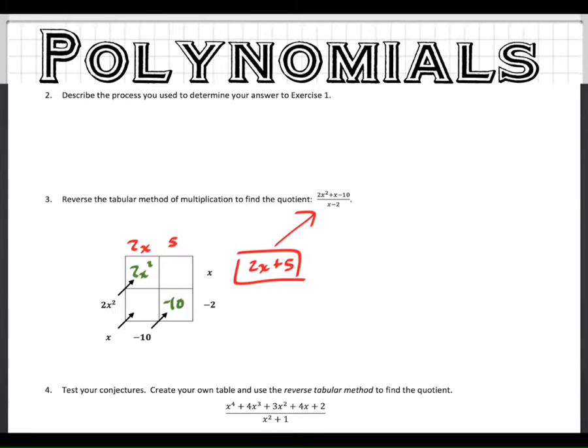Now once you get those two, you can actually find these two answers right there pretty quickly. Because you just have to go 5 times x, which would be 5x. And then you would go 2x times negative 2, which would be negative 4x. We don't need them to find the final answer, but you might need those extra ones to find that.